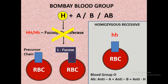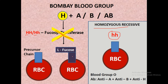In the Bombay blood group system, there is a homozygous recessive condition in which both alleles are small h. So there is no functional H allele present, meaning there is no synthesis of Fucosyltransferase enzyme, which normally transfers L-fucose to the precursor chain to synthesize H substance. Without Fucosyltransferase, there is no H substance on the surface of RBC, and without H substance, neither antigen A nor antigen B can be synthesized.